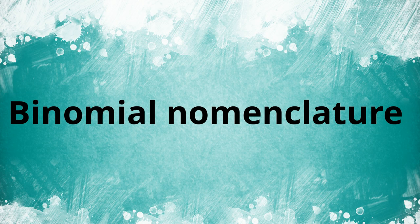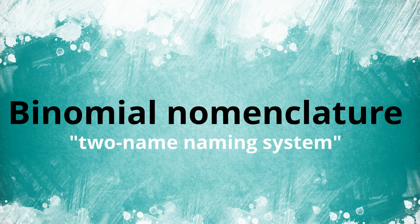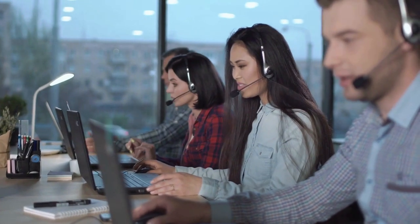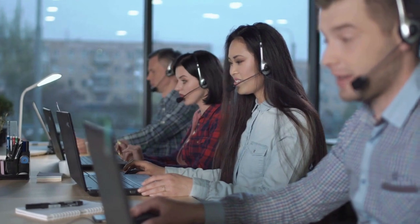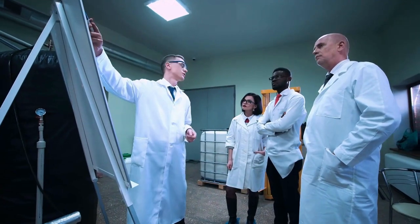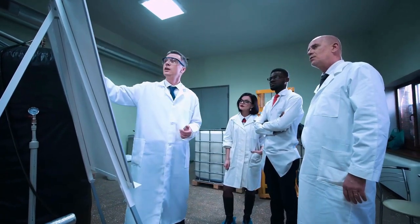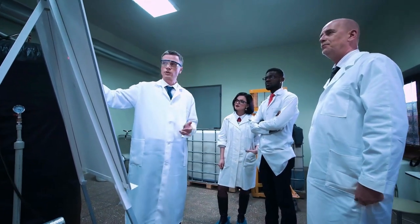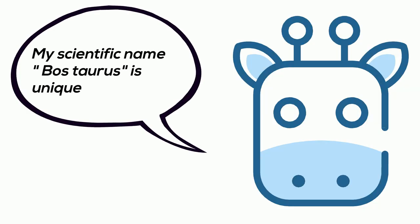This system is called Binomial Nomenclature. These names are important because they allow people throughout the world to communicate effectively. Scientists use international rules to name organisms, and these naming rules mean that every scientific name is unique.